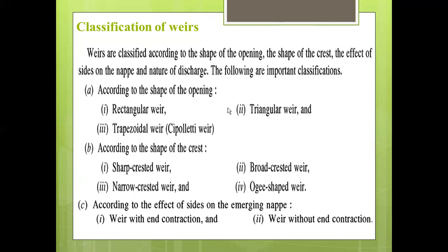According to the shape of opening, there are three types: first rectangular weir, second triangular weir, and third trapezoidal weir — the trapezoidal weir is also called the Cipolletti weir. According to the shape of the crest: first is sharp-crested weir, second broad-crested weir, third narrow-crested weir, and last is ogee-shaped weir. According to the effect of sides on the emerging nappe: weir with end contraction and weir without end contraction.